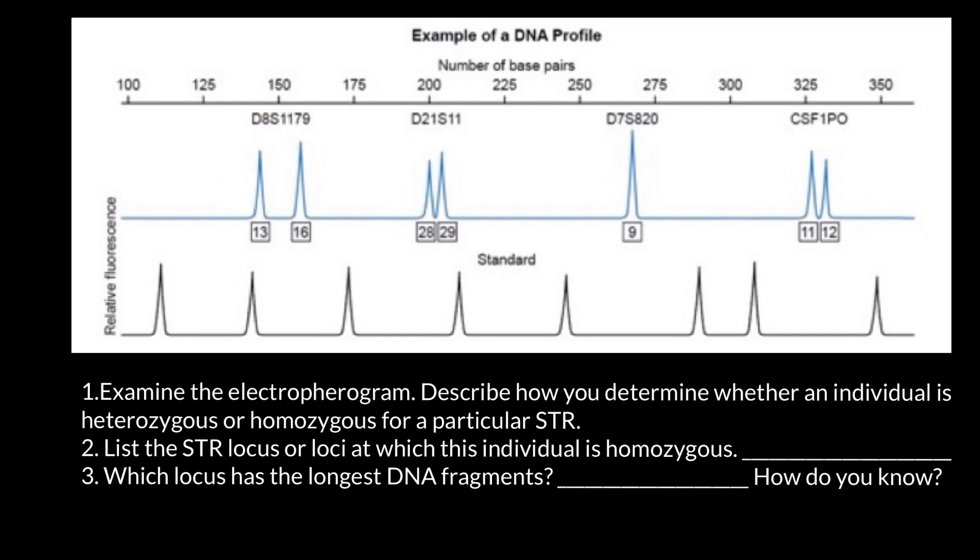On the same chromosome, I mean two homologous chromosomes at the same locus, this person inherited from, say, the mother's side one number of repeats, and from the father's side a different number of repeats. That's why we have here two spikes, the same picture here.